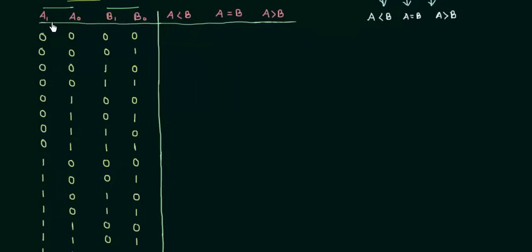When both A and B are 0, 0, which means both are equal, so this is 0, this is 1, and this is 0 because A and B are equal. In the second case B is greater than A, so 1, 0, 0. In the third case B is greater than A, so 1, 0, 0.